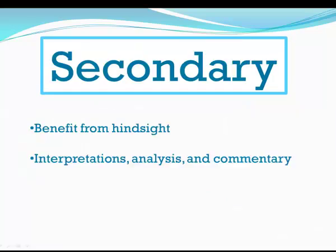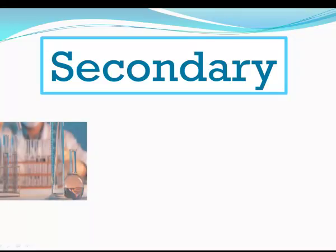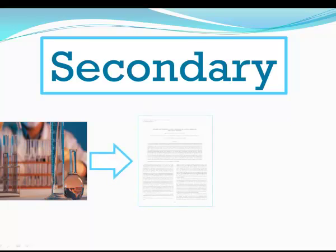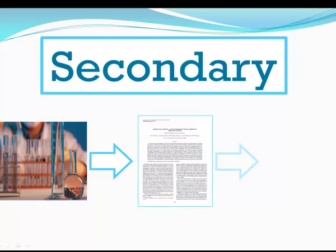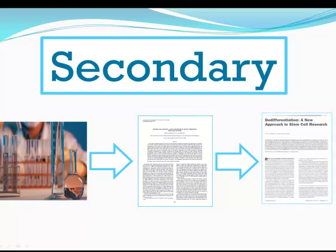Secondary sources offer interpretation, analysis, and commentary on primary sources. For example, a scientist publishes the results of their experiment in a journal. This is original content and a primary source. Another researcher then publishes an article discussing the results of this experiment. Although both are articles, the second article would be considered a secondary source.